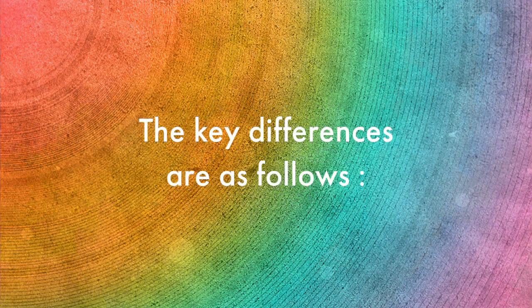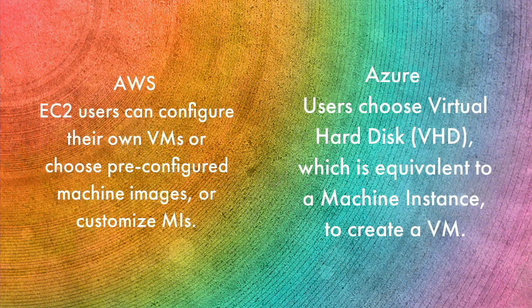The key differences between AWS EC2 and Windows Azure virtual machines are as follows. The very first difference is regarding virtual machines itself. EC2 users can configure their own virtual machines, or can choose from pre-configured machine images, or even customize their machine images as per the requirement.